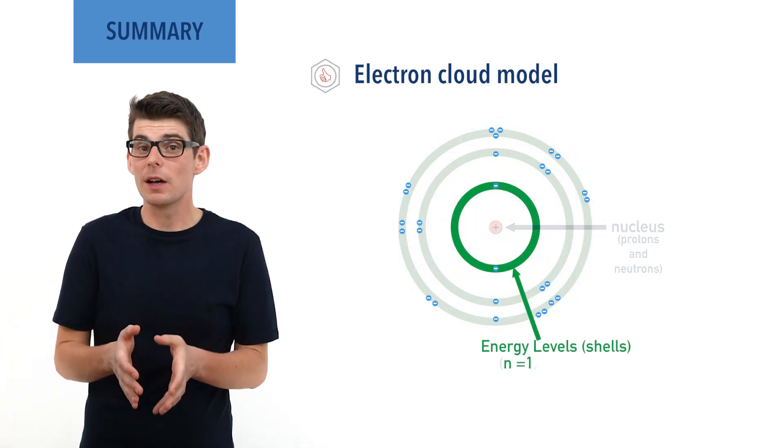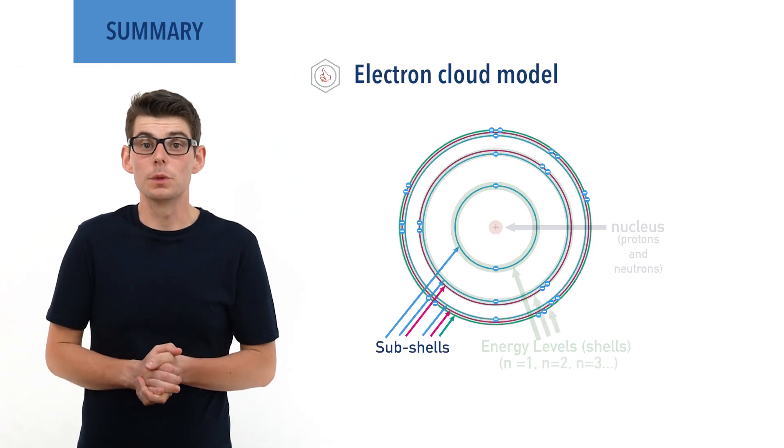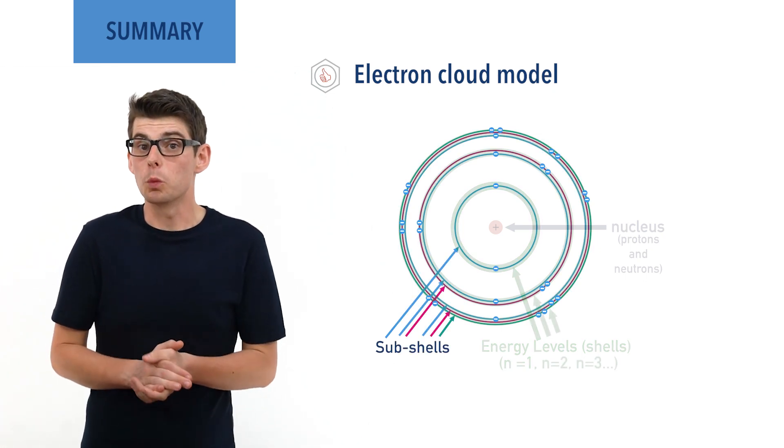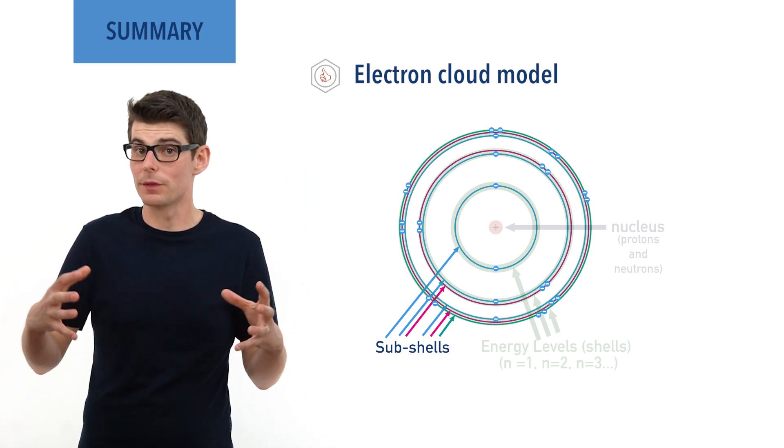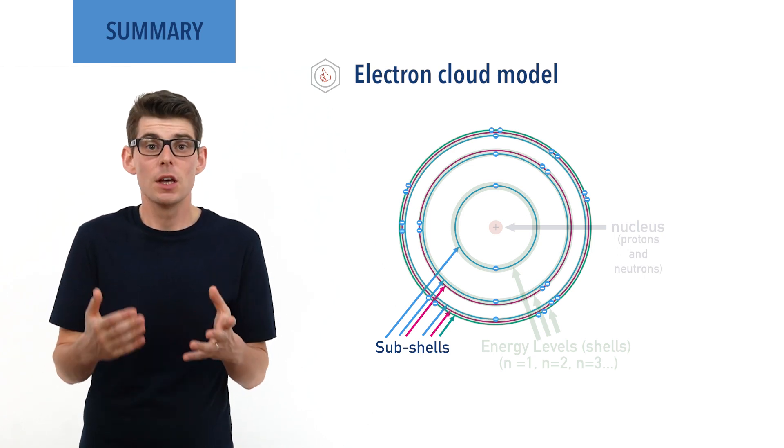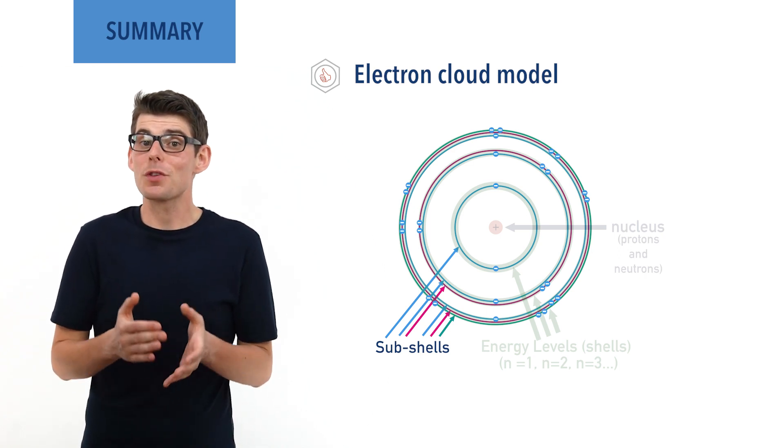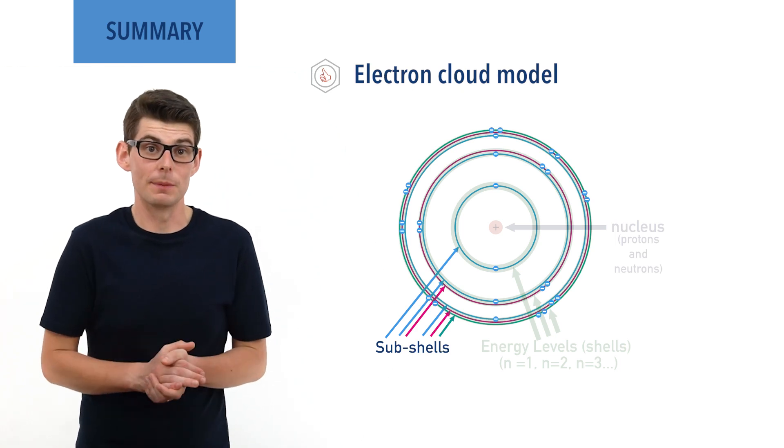There are subshells within a shell, made up of different shaped electron orbitals. One orbital can hold one pair of electrons, and the further you move away from the nucleus of an atom, the more electron orbitals there are that can fit around it, meaning energy levels further from the nucleus contain more subshells and subsequently more electrons.